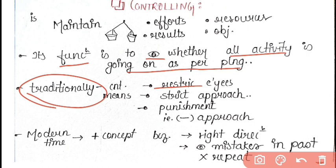They were treated as slaves and a very strict approach was used. Punishment was also given. So there was a very negative approach. Controlling was seen in a completely negative way. If we were called to control a person, we would dominate them. So that thing was happening in the earlier times.